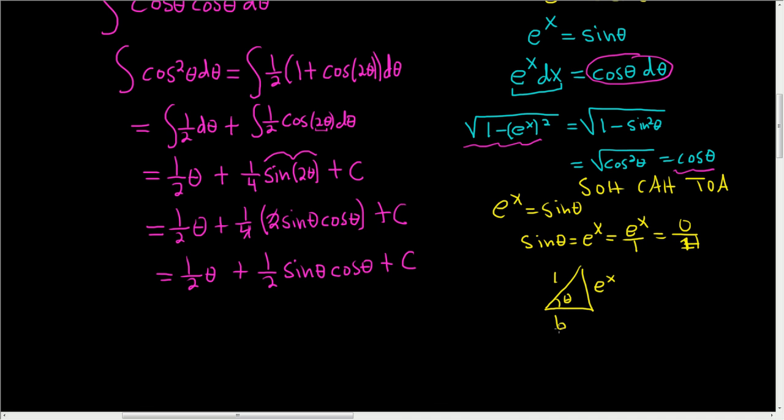So if you call this b, you can use the theorem of Pythagoras to find b. So we know that 1 squared is equal to e to the x squared plus b squared. Subtracting this guy, we end up with b squared equals 1 minus, and then e to the x squared is simply e to the 2x. And so b is the square root of 1 minus e to the 2x.